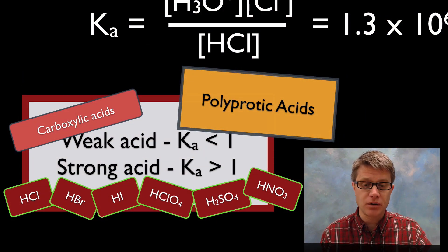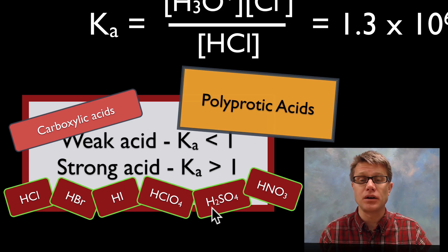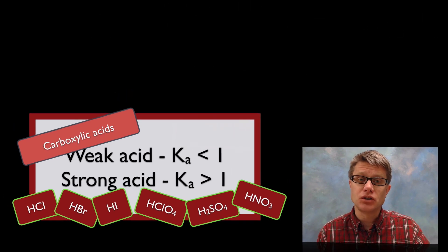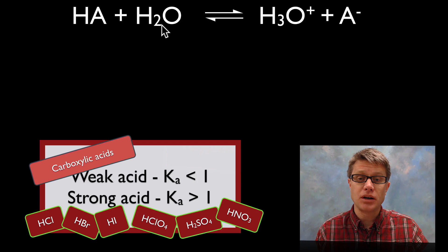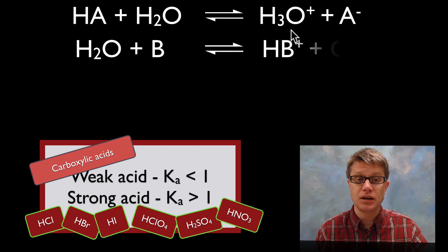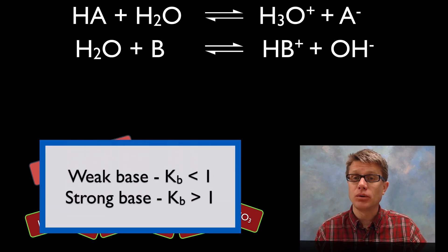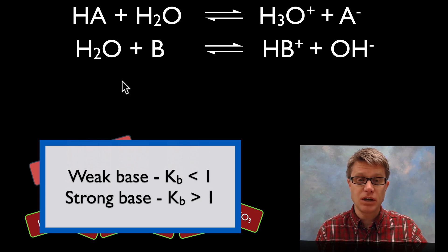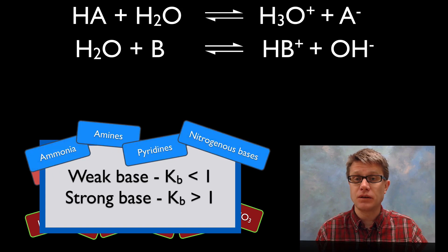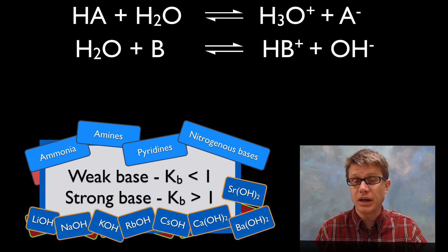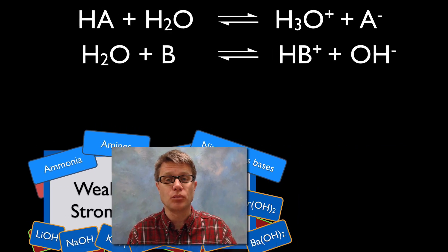We also have polyprotic acids — acids that have 2 protons and donate them in 2 steps. For the general equation of an acid, it donates a proton and forms hydronium. For the general equation of a base, we can also use the equilibrium constant Kb. If Kb is less than 1 it favors the reactants and it's a weak base — there are 4 groups of those. If Kb is greater than 1 it favors the products, giving strong bases, which are all hydroxides formed by combining with atoms from group 1 and group 2.